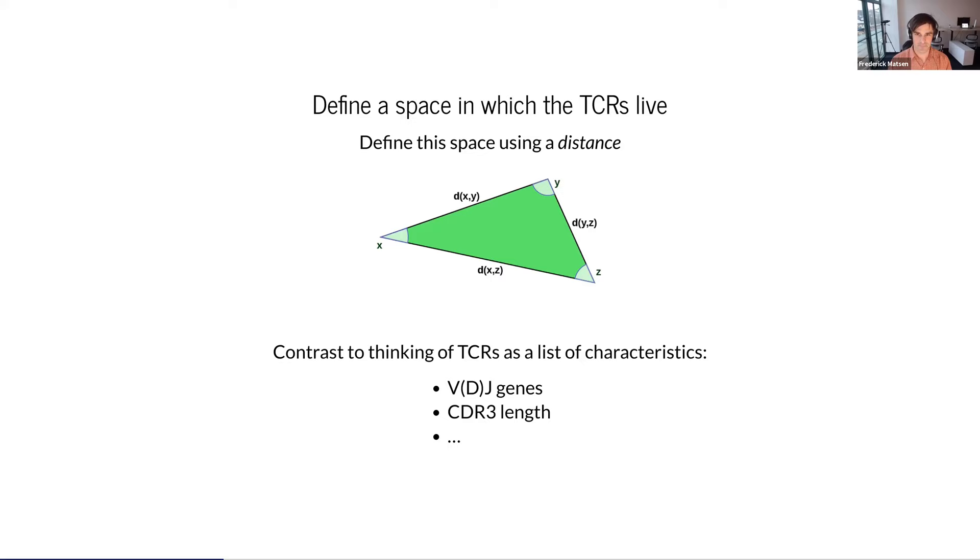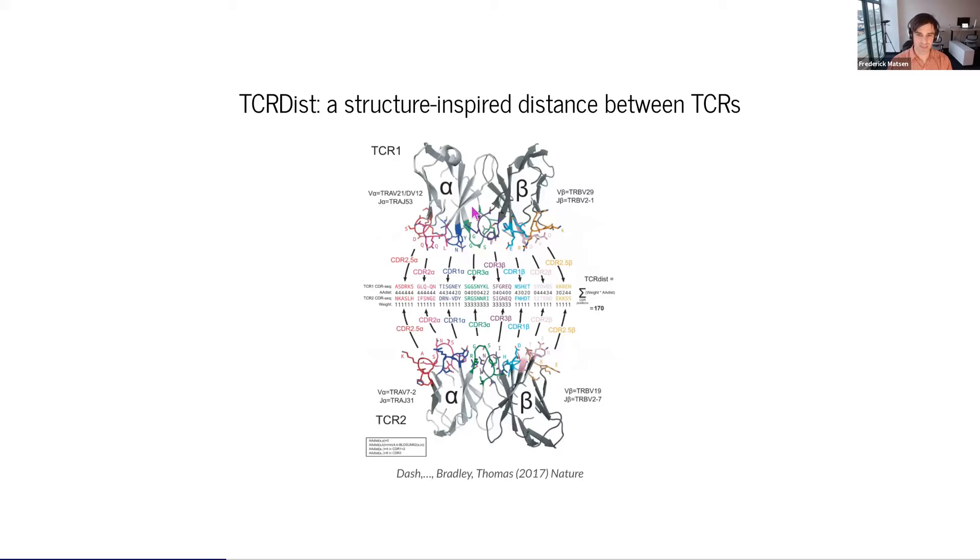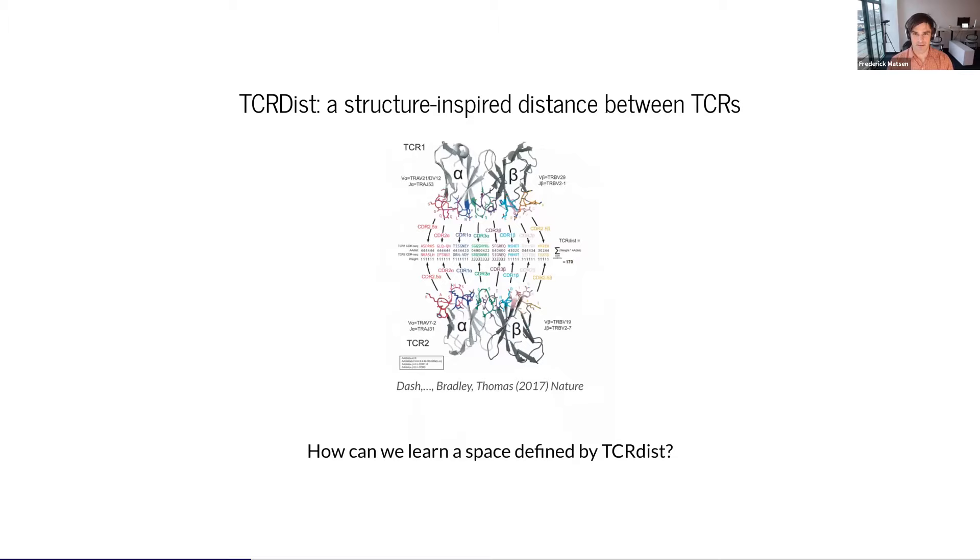The distance that we will use is called TCRDIST. It was developed by Phil Bradley in this paper. The idea of TCRDIST at a very high level is we have two TCRs, TCR1 and TCR2, and we compute a distance between them. If this number is small, then these are two similar TCRs. If it's large, then they're very different TCRs. In a little bit more detail, what this does is it looks at all the different CDRs that are part of this T-cell receptor, aligns them, computes an amino acid similarity score, sums it up, and you get this number.